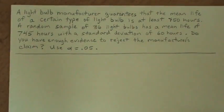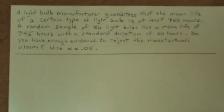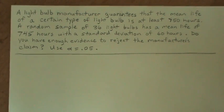Okay, here's an example. There's a light bulb manufacturing company and this company guarantees that the mean life of a certain type of light bulb that they sell is at least 750 hours. So they're going to claim that on average you should be able to get 750 hours of use out of this type of light bulb.